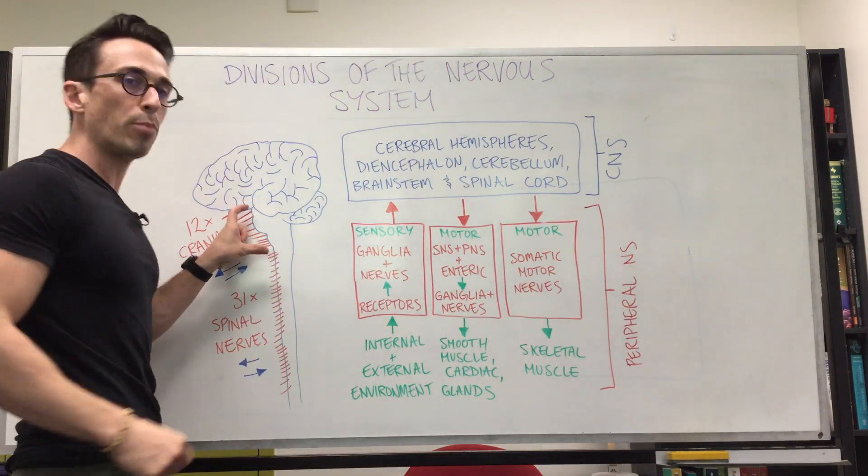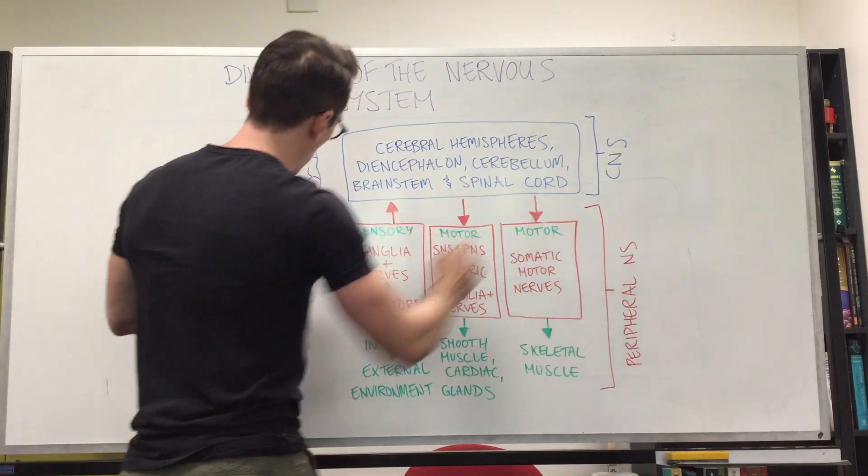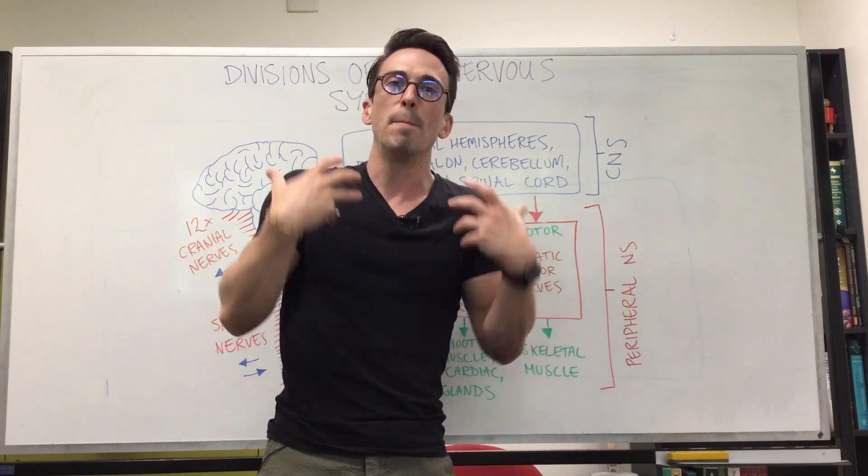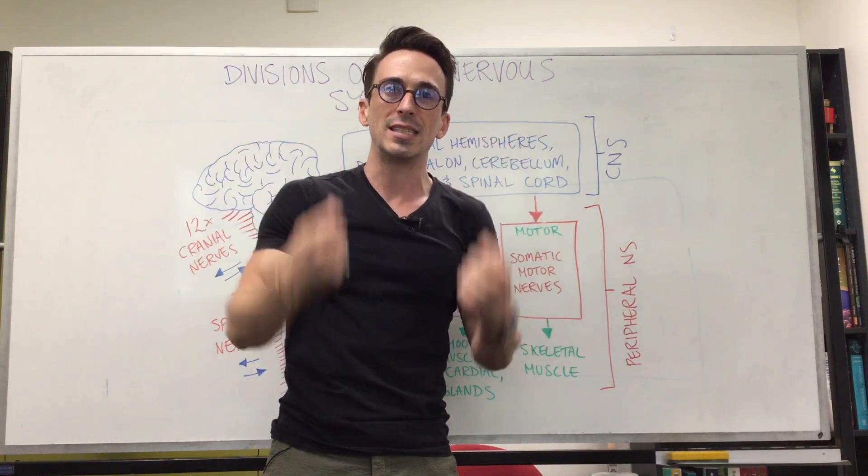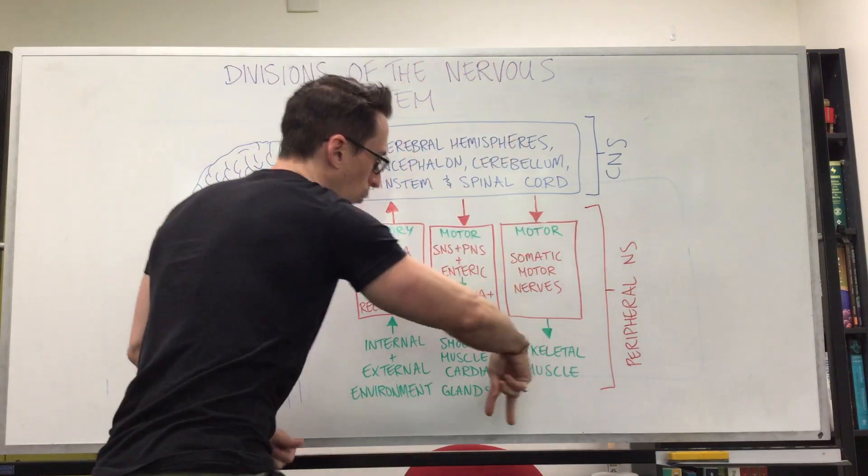Brainstem, which is the midbrain, pons, and medulla, and the spinal cord itself. All of these central nervous system components are there for processing, making sense, creating decisions. Things can go towards the central nervous system or out and away.